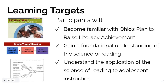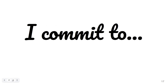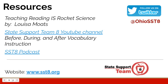We have arrived at the conclusion of the adolescent introduction to the science of reading. Let's revisit the three main learning targets introduced at the beginning of the session. As a participant, you are now familiar with Ohio's plan to raise literacy achievement, have gained a foundational understanding of the science of reading, and understand the application of the science of reading to adolescent instruction. Our final assignment is to decide what you will commit to implementing based on what you learned today. Take a moment to jot down your commitment and commit to putting it into action. Linked here and in your participation guide, you will find access to additional resources to support your science of reading journey.